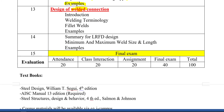After bolted connections, we cover design of welded connections. We'll introduce welding terminology: arc weld, fillet weld, butt weld, and so on. Due to the limited time of this course, we'll study only the fillet weld. We'll apply examples based on fillet weld equations, then go through the LRFD design steps for welds, and cover limitations on minimum and maximum weld size and length according to AISC, followed by examples.